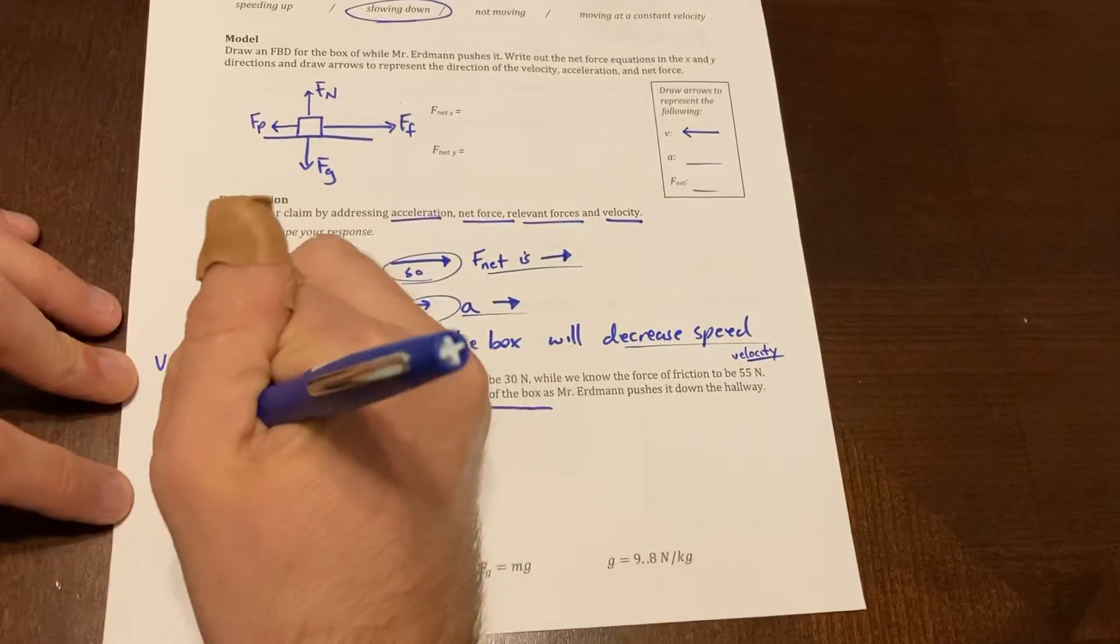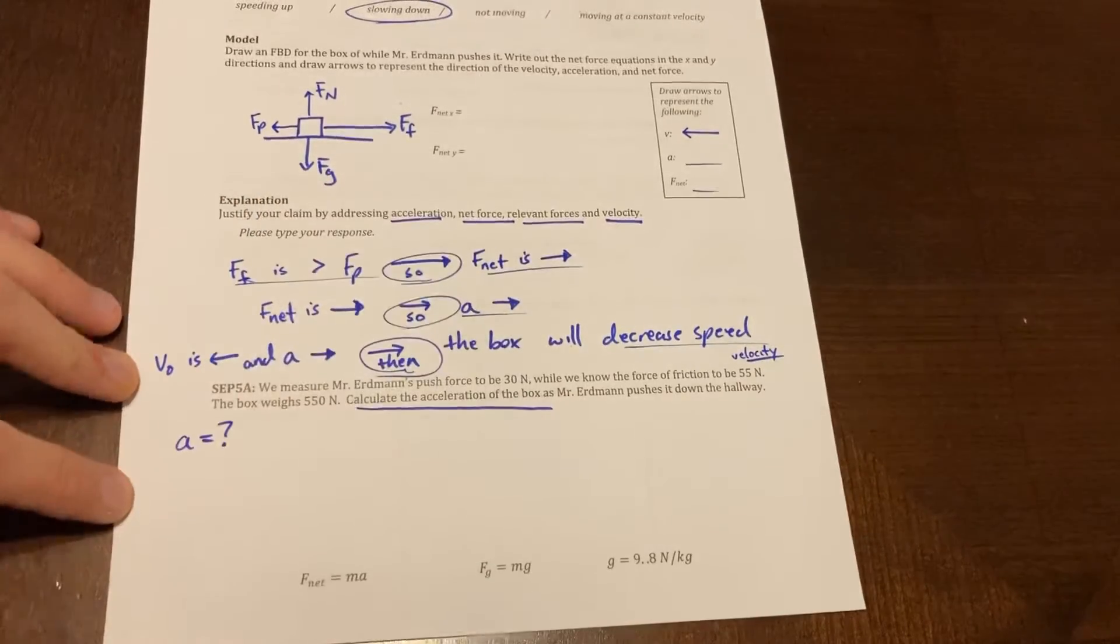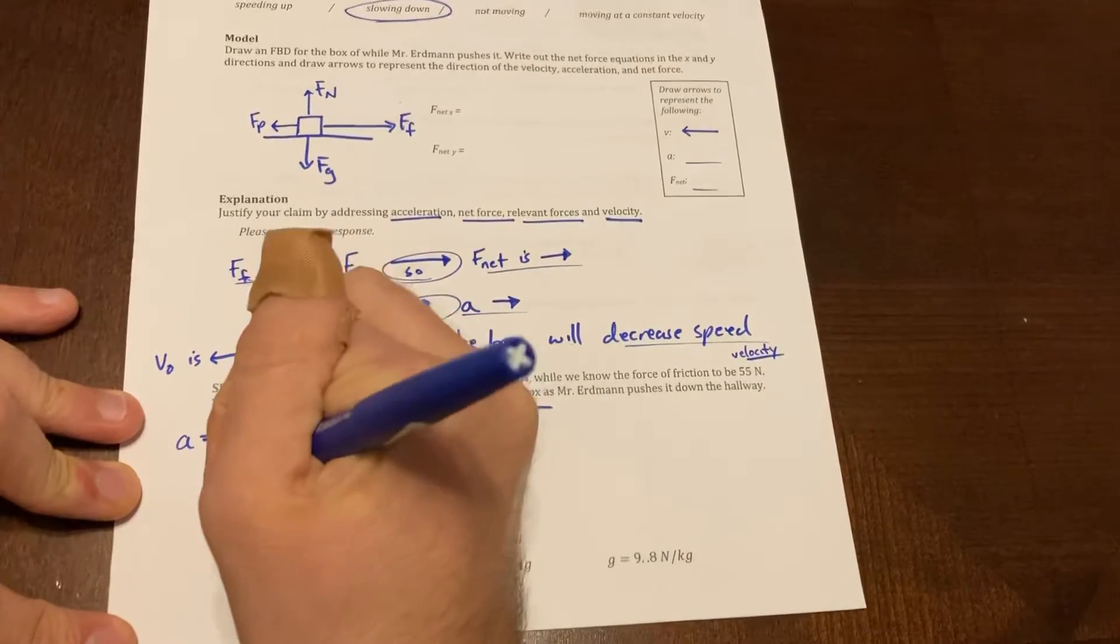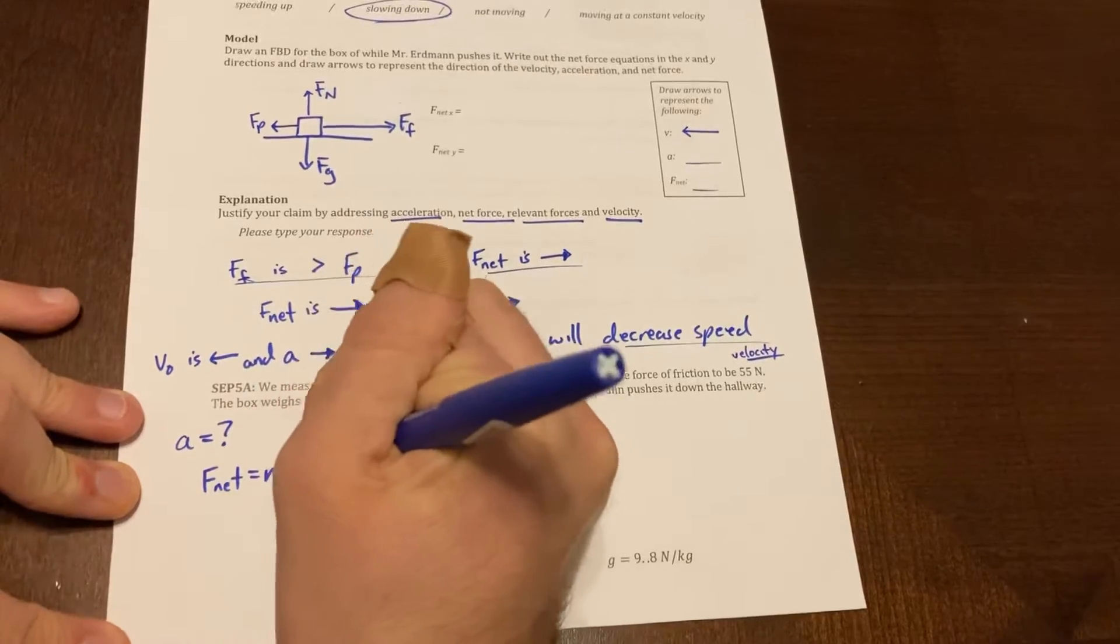So I'm looking for my acceleration. Then out of my equations, which one do I have to use? F_net equals ma because it's the only equation that has acceleration in it.